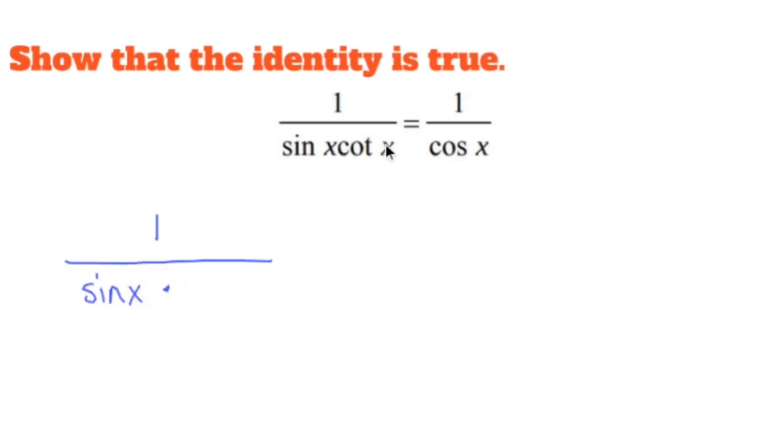But cotangent x is cosine x over sine x. Sine x is in an invisible numerator and an invisible denominator. Well, not invisible, actual denominator. And they cross each other out.